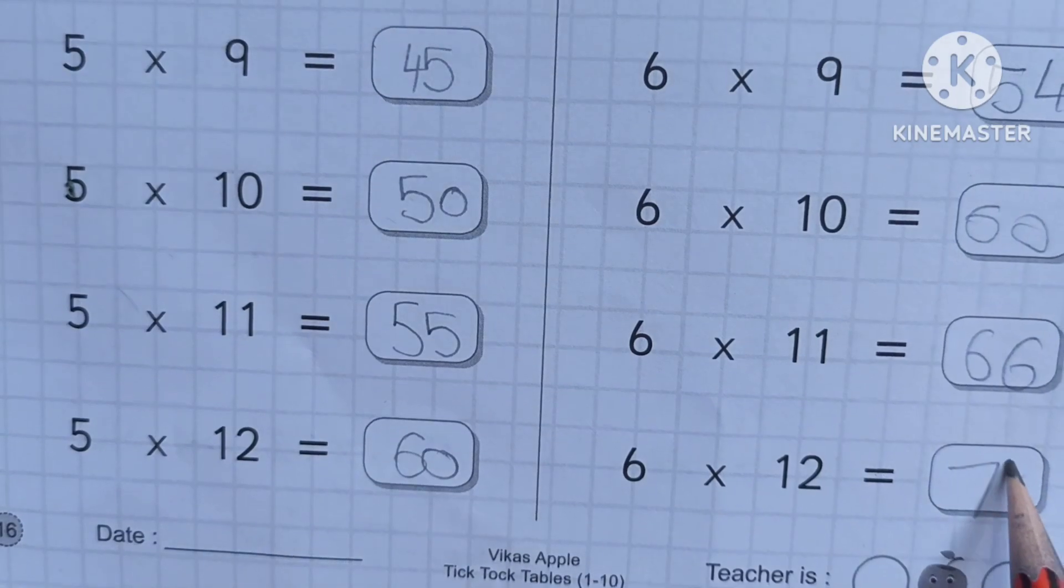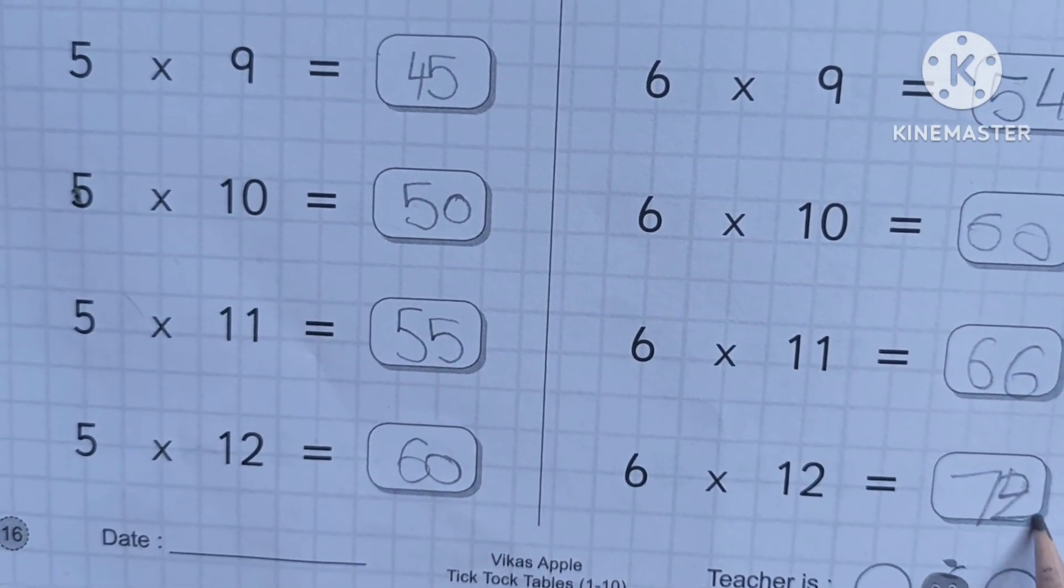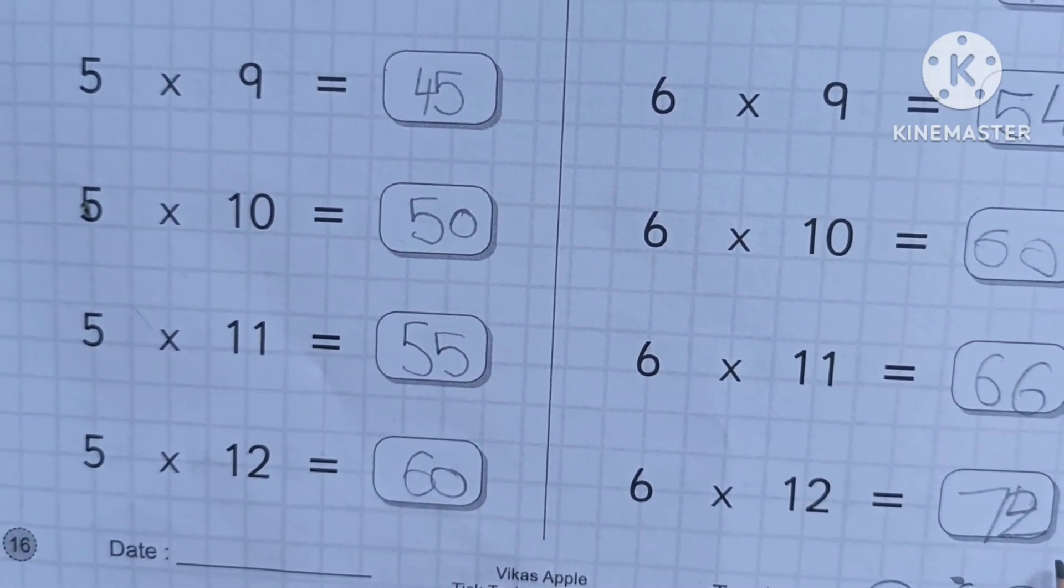Six elevens are sixty-six. Six twelves are seventy-two. Seventy-two, right. Very good.